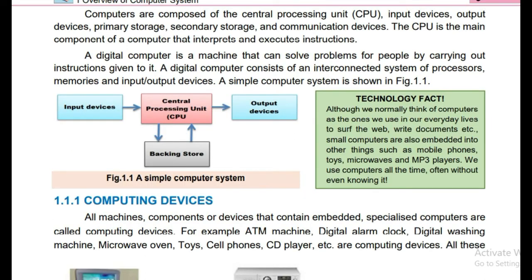Computers are composed of a central processing unit, input devices, output devices, primary storage, secondary storage such as hard disk, and communication devices for networking. The CPU is the main component of the computer that interprets and executes instructions. Jaisay ke humne study kiya ke processing jo hoti hai woh inside central processing unit hoti hai — so CPU is the main component of the computer system, or we can say CPU is the brain of the computer system.